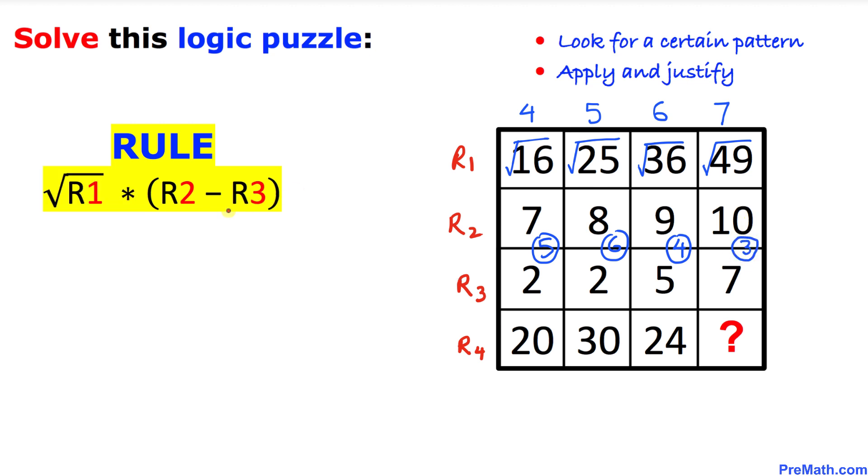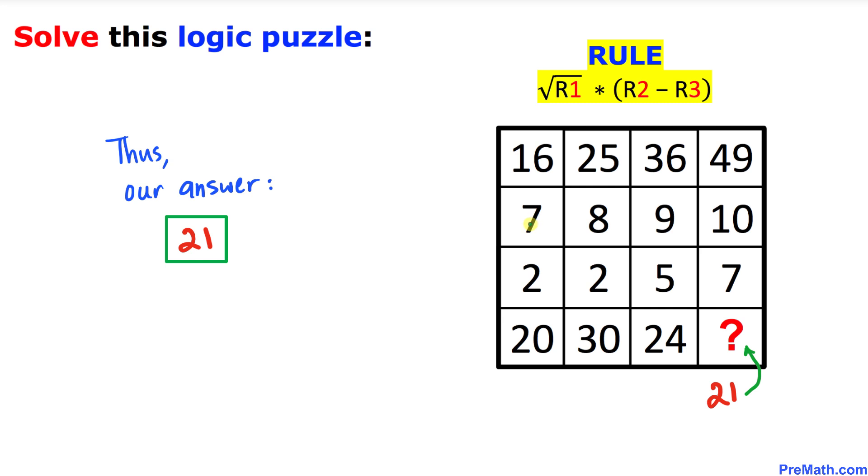And here's our final step. Let's go ahead and multiply these numbers. 4 times 5 is going to give us 20, 5 times 6 is 30 indeed, 6 times 4 is 24. So therefore, 7 times 3 means the number over here is going to be 21. Thus our answer turns out to be 21.